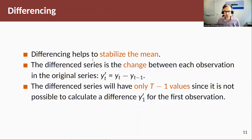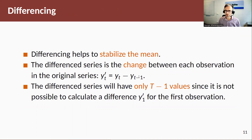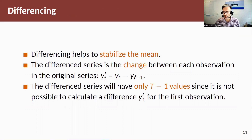Differencing helps to stabilize the mean. The difference series is the change between each observation and the previous one: yt′ = yt − yt−1. With a differenced time series we can only have t − 1 values, as we cannot calculate y1′. The first difference value we can calculate is y2′ = y2 − y1.